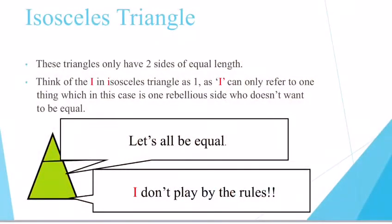The next type of triangle is an isosceles triangle. These triangles only have two sides of equal length. I always think of the 'I' in isosceles as one, because 'I' only really refers to one thing. When you're talking about 'I'—like 'I went to the shops' or 'I had some candy'—you're only focusing on one person, and that's you. So I translate that into one side that's a little bit rebellious and doesn't play by the rules.